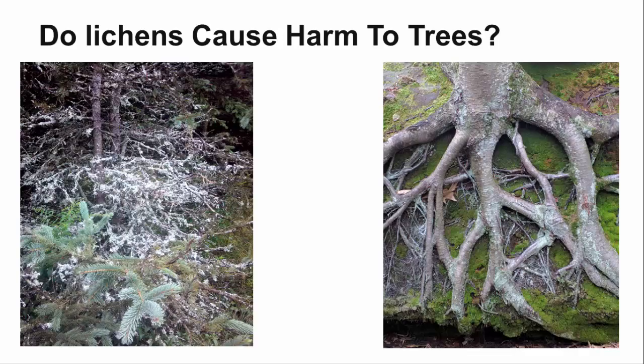When taken into consideration how lichens get their nutrients and water needed to survive, they pose no danger to the trees on which they grow. They only use the bark on the tree as a place to live and grow. They do not penetrate into the inner bark of trees, and they take no nutrients or water from the tree.